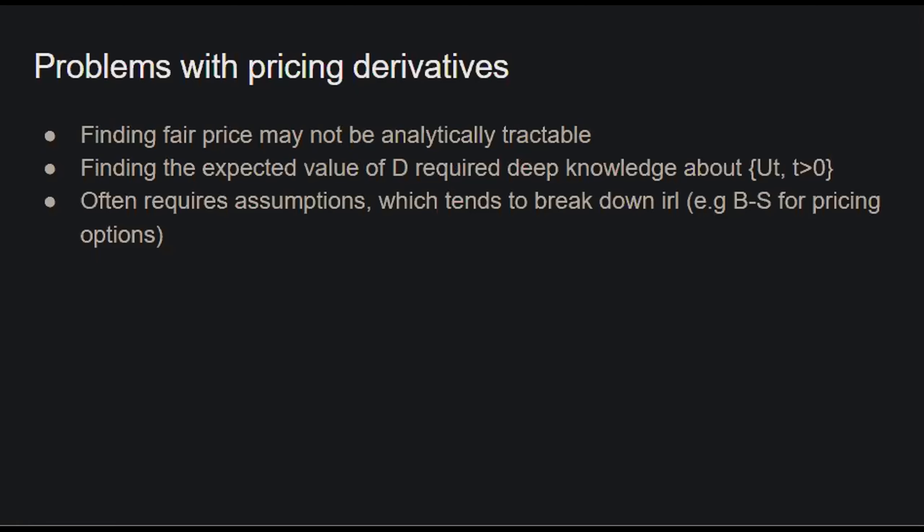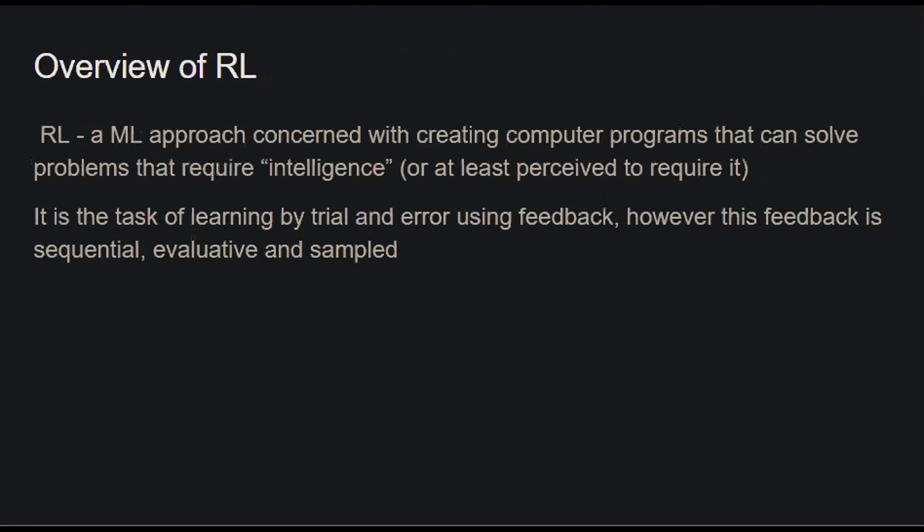Often some of the required assumptions used in models for pricing derivatives tend to break down in real life. For example, the Black-Scholes model for pricing options assumes that the returns of the stock price follow a log-normal distribution. But in real-world data we tend to see jump discontinuities and fat tails, and the log-normal distribution would be neither discontinuous nor have fat tails, so it kind of breaks down in that case.